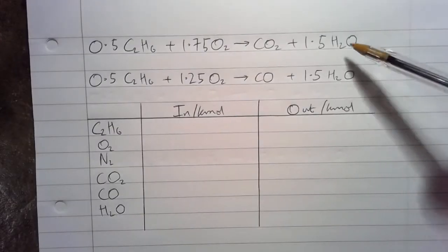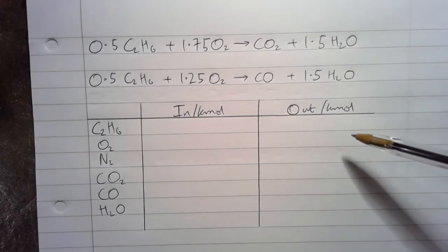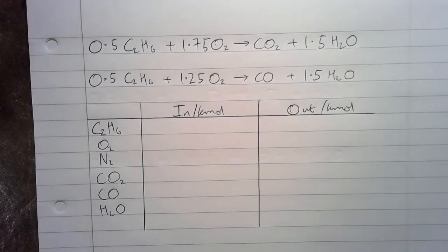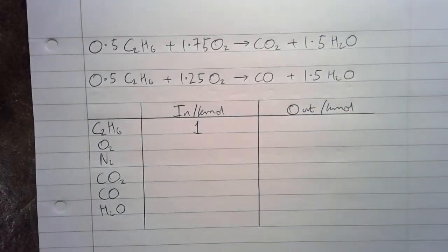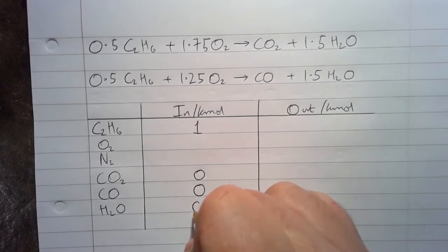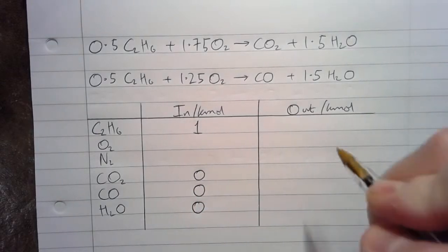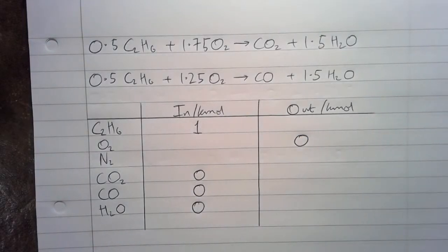So here are the simplified equations and we've got a table to see what's going in and what's coming out. First we'll fill in bits and pieces that we know. What's coming in: we've got 1 K mole of ethane because that's the basis we're working on. We know we have 0 CO2, 0 CO, and 0 water going in, and we know we'll have 0 oxygen coming out because we've got incomplete combustion and all the O2 is used up.